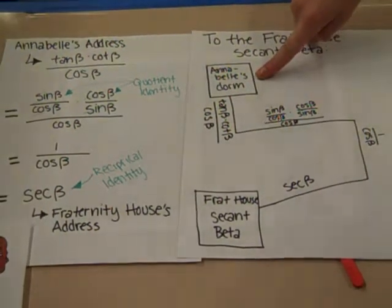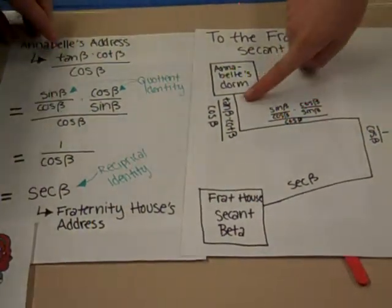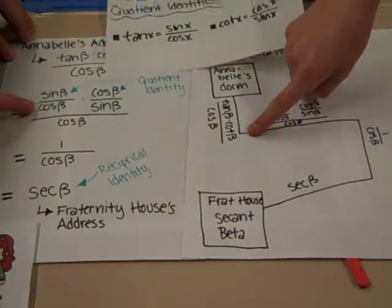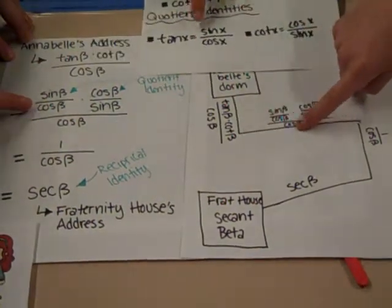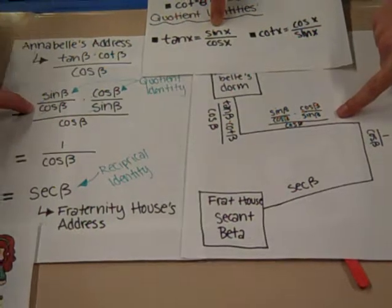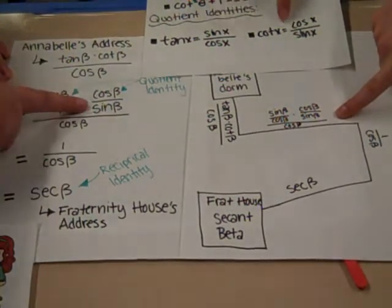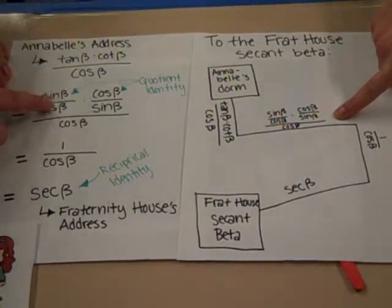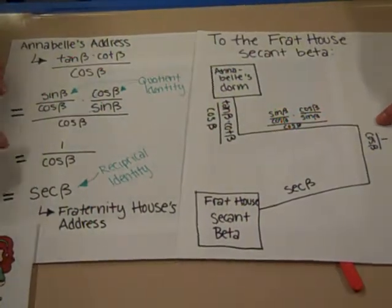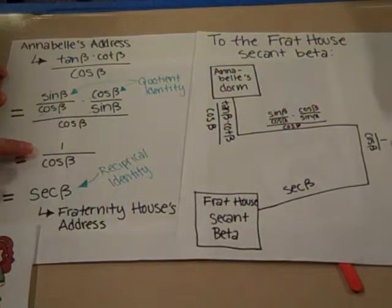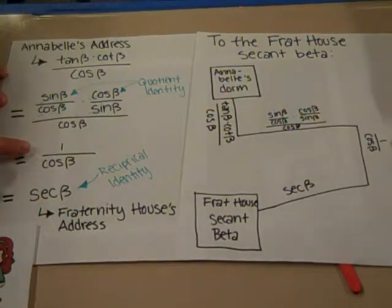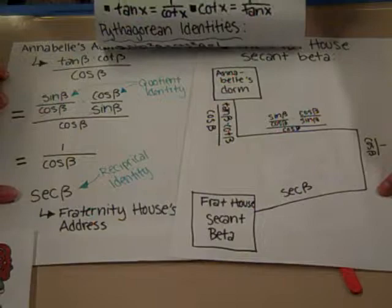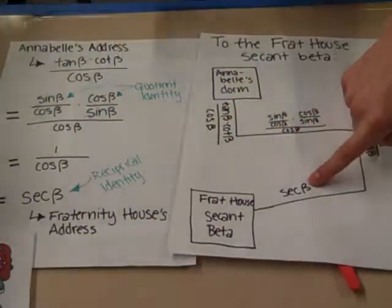Okay. Since we're starting at tan β · cot β / cos β, we changed streets after using the quotient identity to turn tan β into sin β / cos β, and cot β into cos β / sin β. Then, by multiplying those, they cancel each other out, and we change streets again to 1 / cos β. Then our last turn is after we use the reciprocal identity to get secant beta, and then we're at the fraternity house.